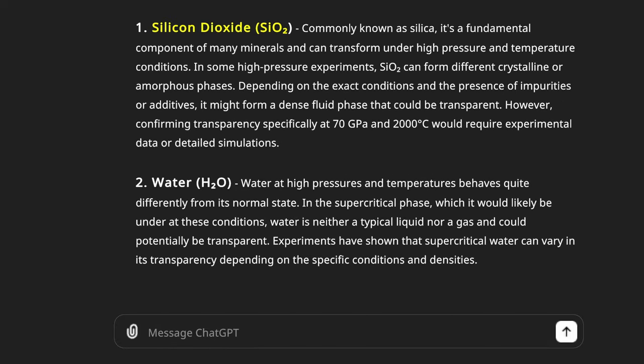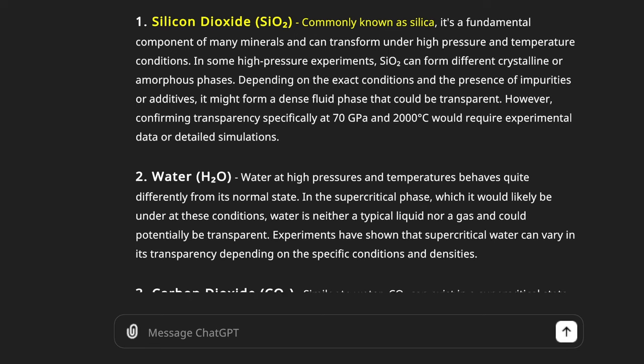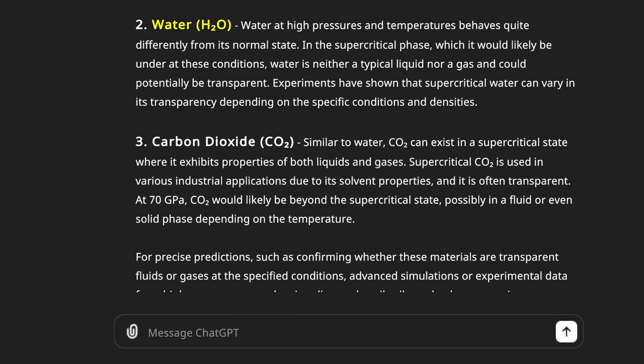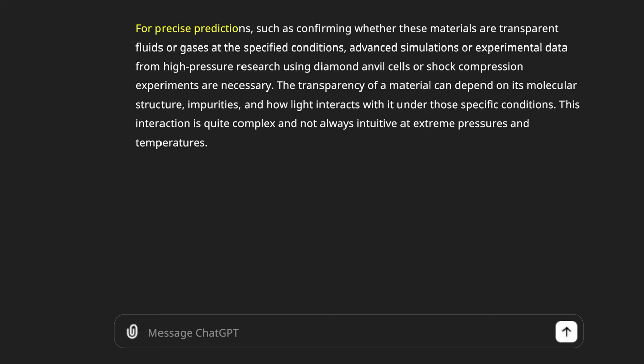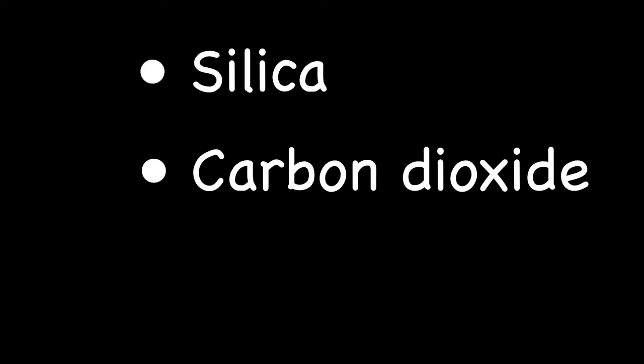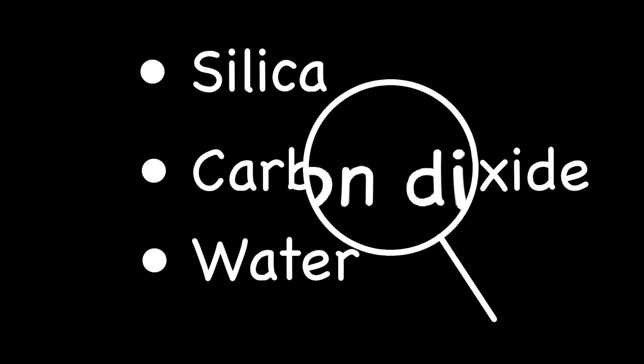Silicon dioxide, commonly known as silica. Water, H2O. And carbon dioxide, CO2. For precise predictions, advanced simulations or experimental data from high-pressure research using diamond anvil cells are necessary. Hmm, diamond anvil cells. I wonder what those are. Let's check that in a bit. Alright, so the options are silica, carbon dioxide or water. And as ChatGPT itself says, we'll need to check some of these things ourselves.